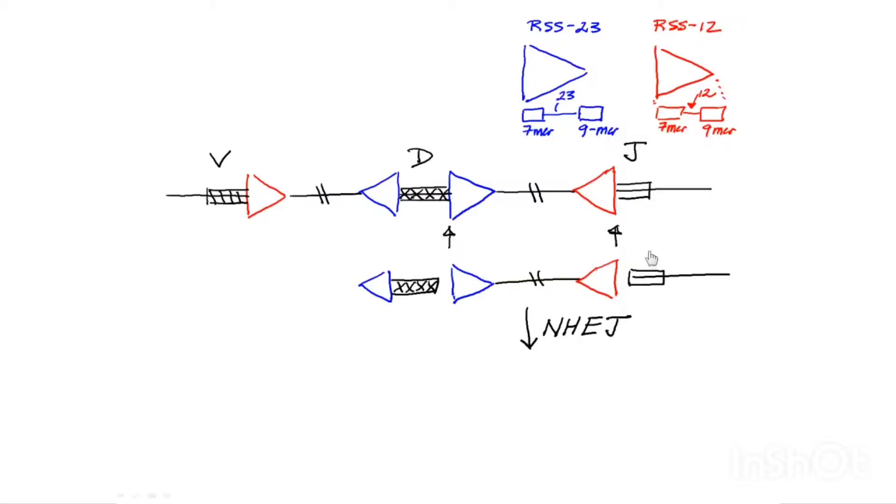They're going to take the J segment and the D segment and join them. And the two recombination signal sequence ends and join them. And the reason it's going to do it that way is because RAG1 and RAG2, after making the cleavage, end up bound to the recombination signal sequences to prevent the joining of those two ends for a little bit, to delay the joining, so that the only two ends that can be joined are D to J.